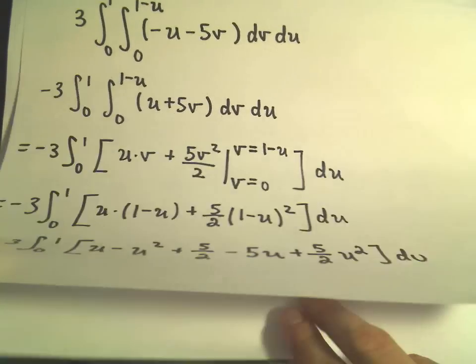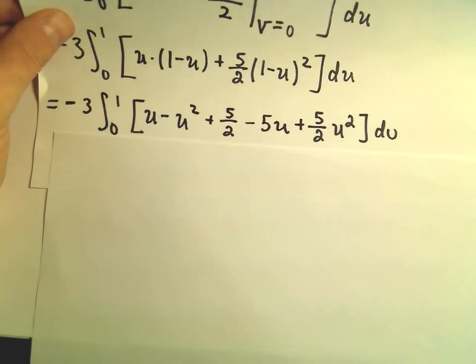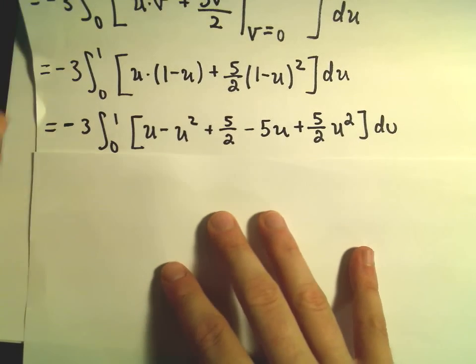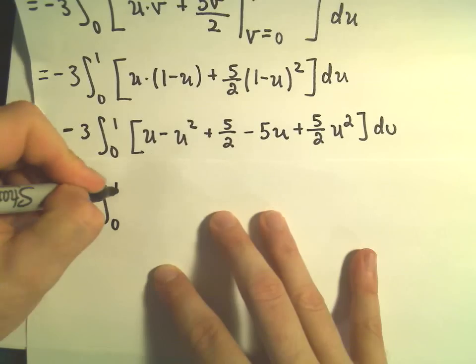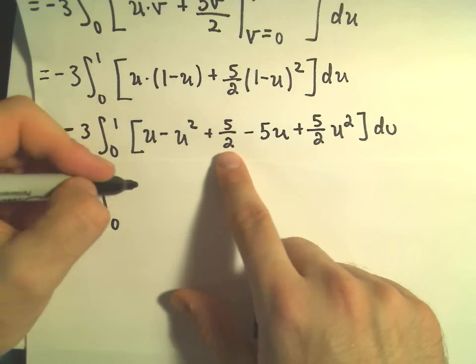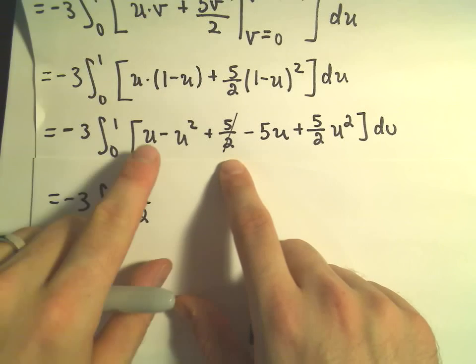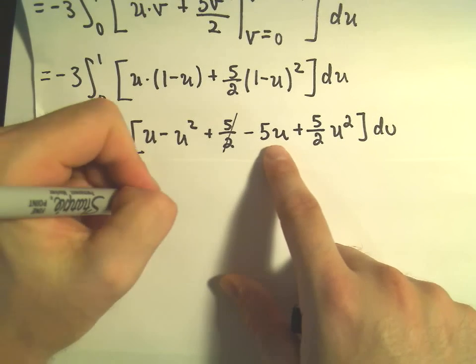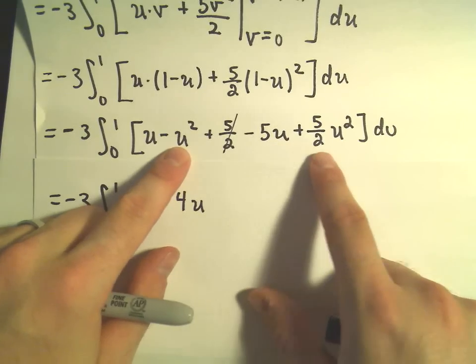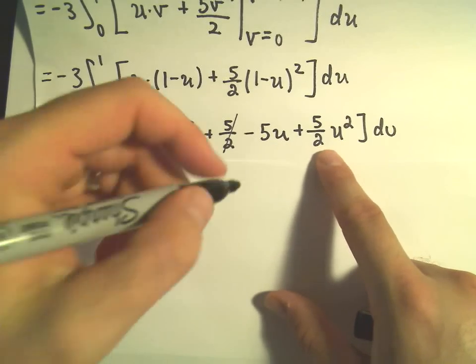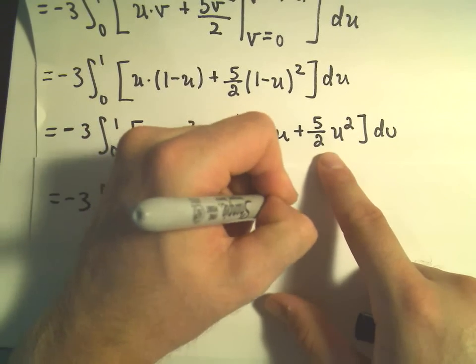Okay, so I think we've got a few like terms here that at least we can condense down a little bit. So if we combine these, we've got negative 3, we've got the integral from 0 to 1. I'm going to write my constant first. We have 5 halves, so that would take care of that. We've got u minus 5u, so that's negative 4u. We've got a negative u squared plus 5 halves u squared. That's going to leave us with a positive 3 halves u squared.